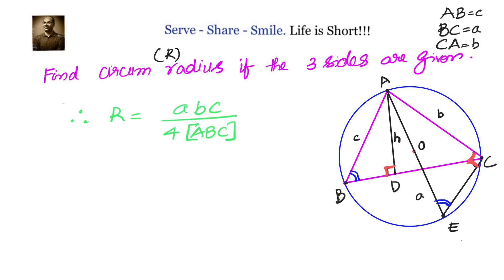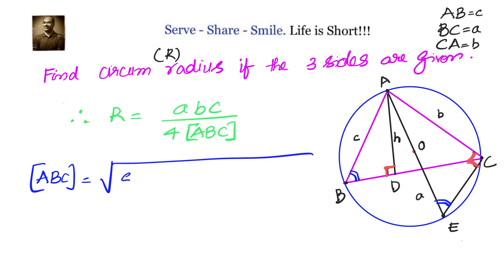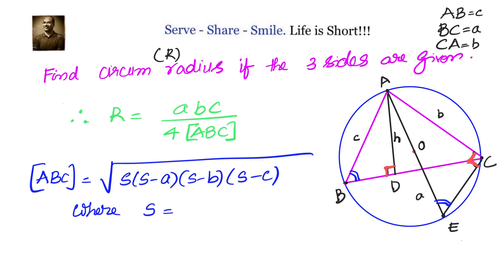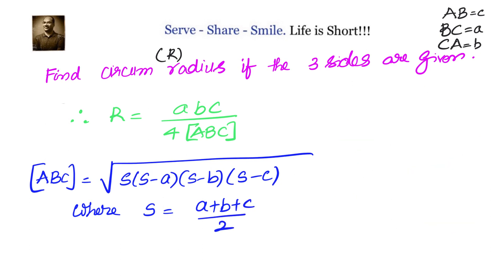The area of the triangle can be obtained by Heron's formula: area = √(s(s−a)(s−b)(s−c)), where s is the semi-perimeter given by s = (a + b + c) / 2.